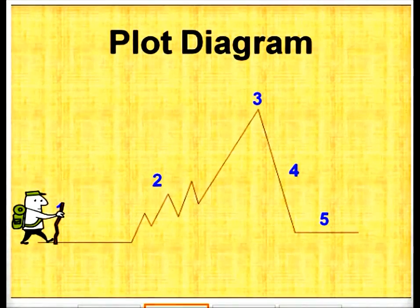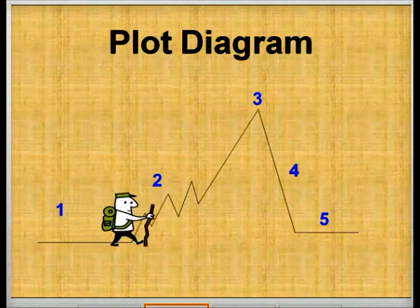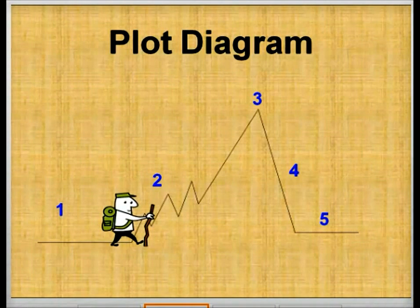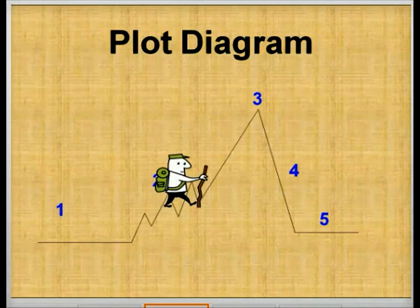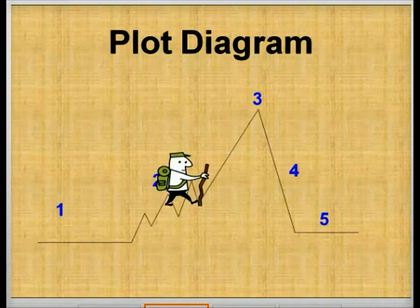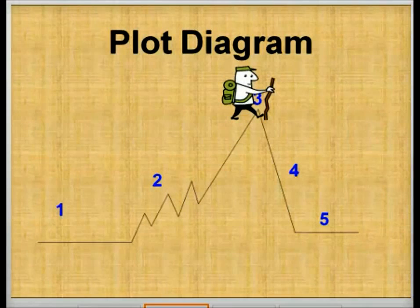The second metaphor for a plot diagram that's often used is a mountain. When you first start up your hike, maybe you're climbing Camelback and you've got this steep hill in front of you. As you're starting to climb it, you're getting closer to the top. Once you reach the top, you can see everything. And all you have left to do is go down, which is the easiest part.